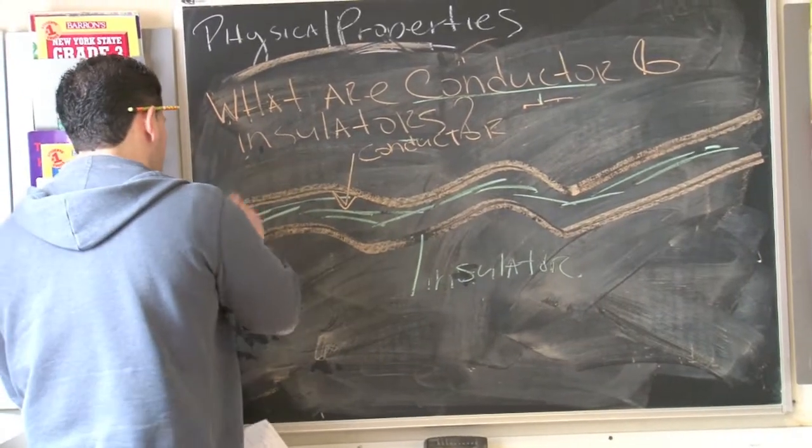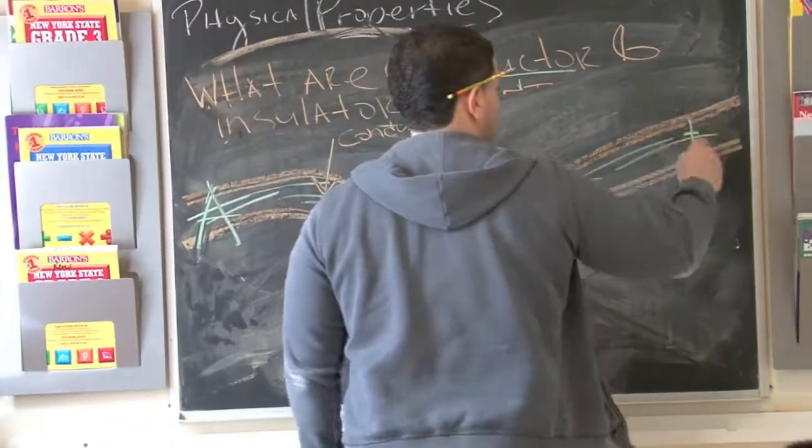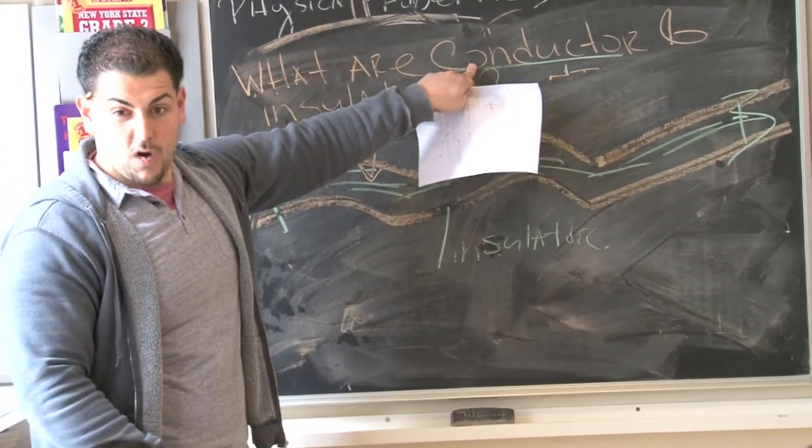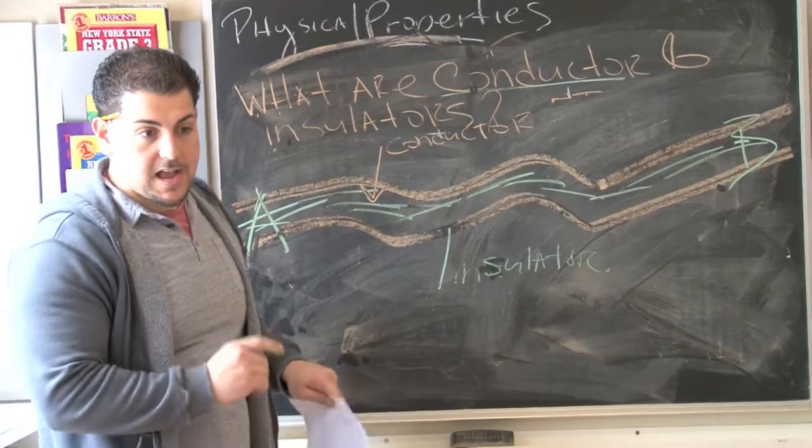So if I want to get point A is here and B is here. I want to get the electricity from here to here. I've got a conductor, right? Those are wires. But I've got to keep it protected.